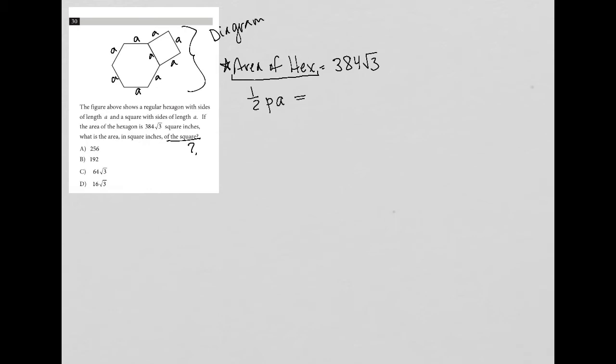So one half PA equals 384√3. So again, P is perimeter, A is apothem. The perimeter in this case, we have six sides of the hexagon. They're all of length A. So the perimeter is 6A.